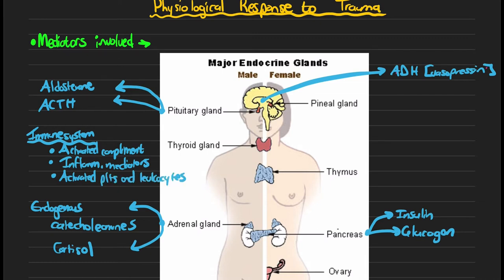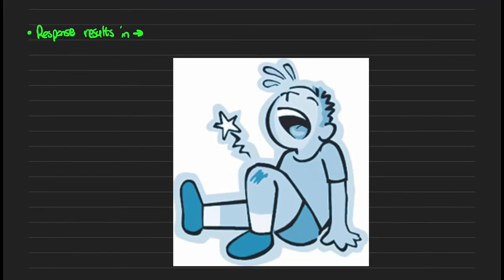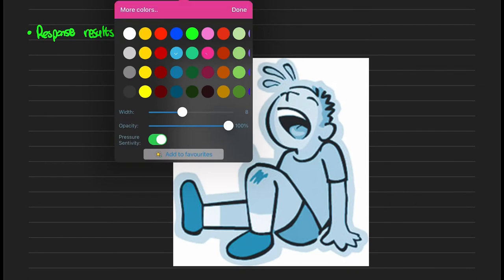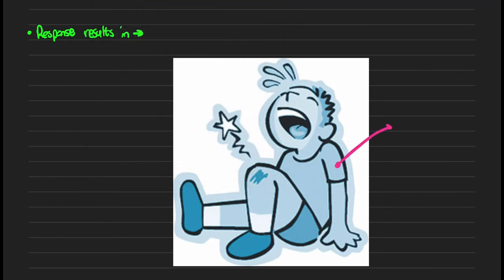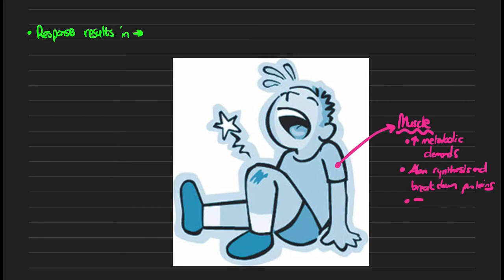Let's move on to the second part of the video and discuss what this response results in. If we focus on the muscle region of the patient, we typically see increased metabolic demand, so your patient is in a catabolic state. We also see abnormal synthesis and breakdown of proteins, and typically the patient has a negative nitrogen balance.